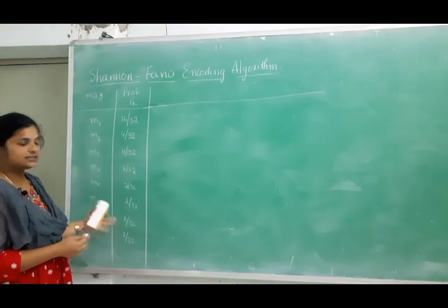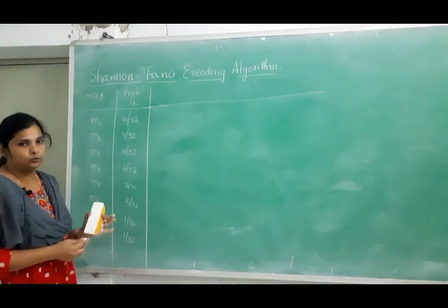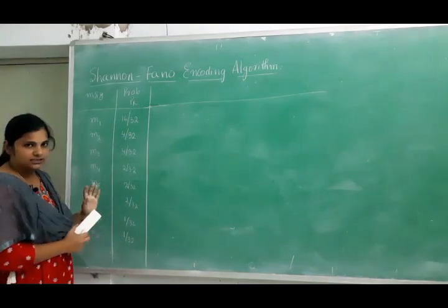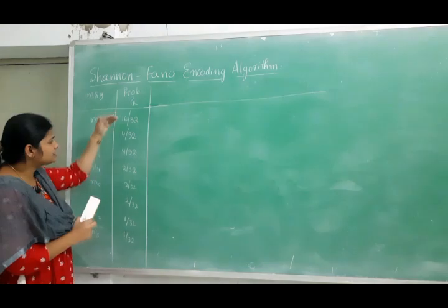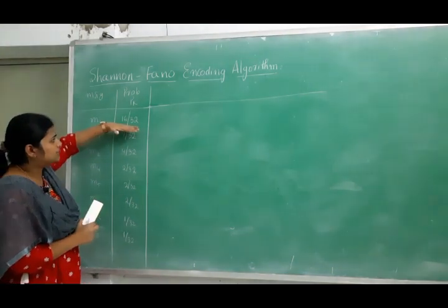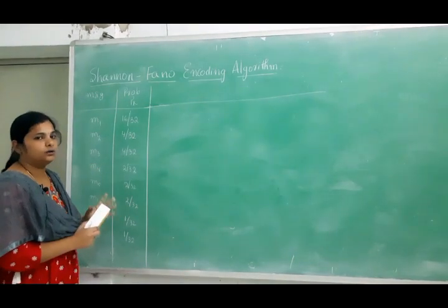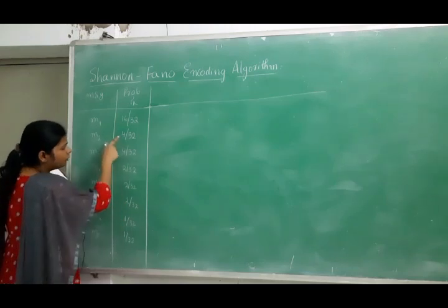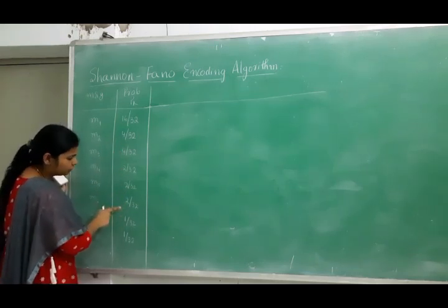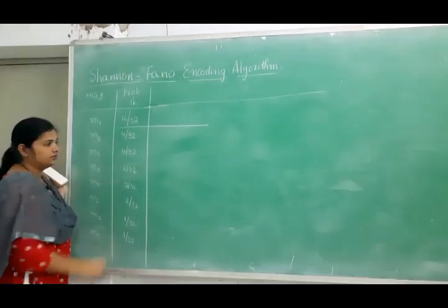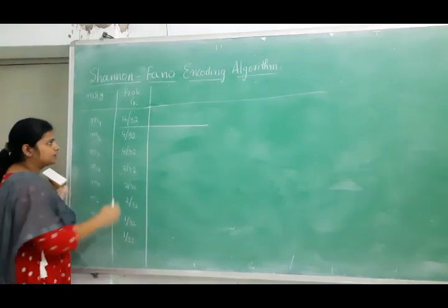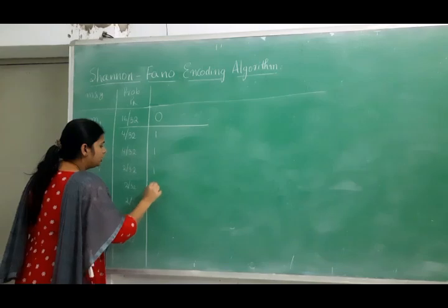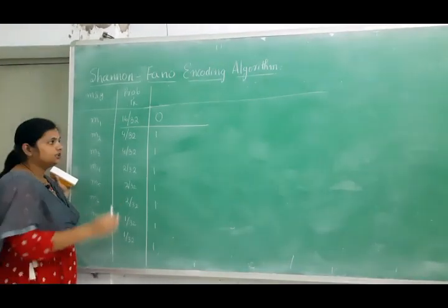Taking this example, the messages are already in descending order. For step two, I check where to divide: the first message has probability 16/32, and the sum of the remaining values — 4+4+2+2+2+1+1 = 16/32 — equals 16/32. So the partition is after the first message. Step three: assign bit 0 to the upper part (m1) and bit 1 to the lower part (m2 through m8).